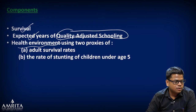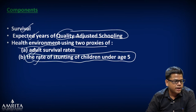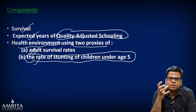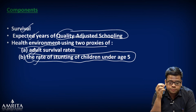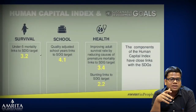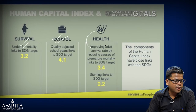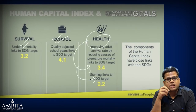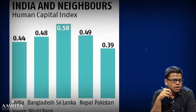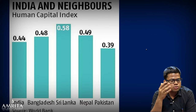The three components of the Human Capital Index are: survival, expected years of quality-adjusted schooling, and health. The two indicators under health are adult survival rate and rate of stunting of Indian children under age five. In the last session we discussed stunting — the Global Hunger Index highlighted that one out of every three children in India is stunted. These parameters are closely linked with the SDGs.